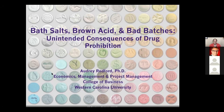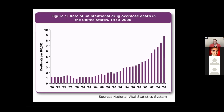That's basically what we're going to talk about today. The title is 'Bath Salts, Brown Acid, and Bad Batches,' and we're going to talk about each of those three things. To give you a frame of reference for this presentation, consider this graph. A large body of my work is basically trying to understand why this graph is shaped this way.